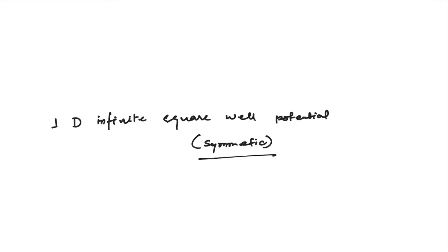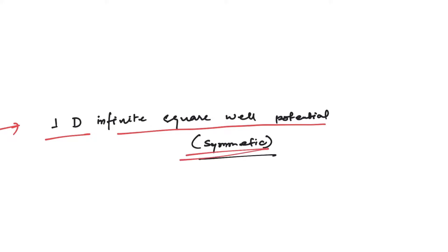Hello friends, welcome to another video on quantum mechanics. In the previous video we discussed the 1D infinite square well potential which was asymmetric, but in this video we will discuss the 1D infinite square well potential which is symmetric. The link to the previous video is provided in the description box — if you haven't watched that, please go through it first as it will help you understand this topic.